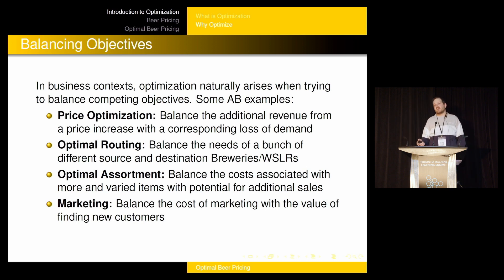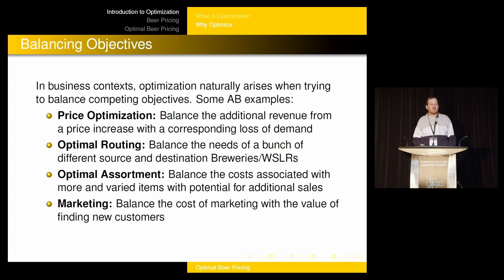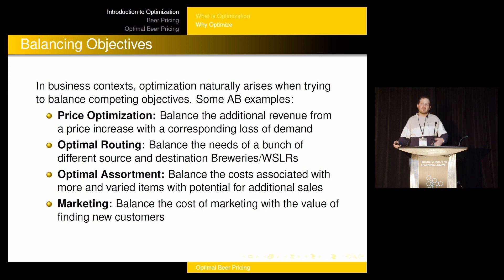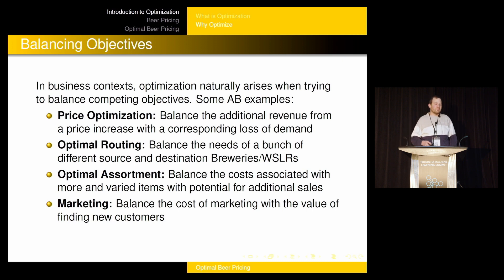Optimal assortment is another optimization problem. You've got a store with only so much room for different products — what is the best selection to make the most money? If you change the selection, you might have more available options, but that could overwhelm people or mean you run out quicker. Even marketing is an optimization problem: it costs money to do marketing, so how do you trade off the cost of marketing with the value of finding new customers?